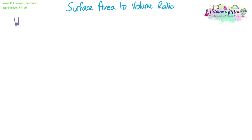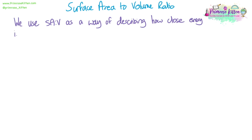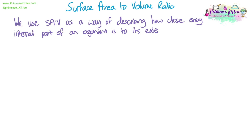Surface area to volume ratio — in biology we use it as a way of describing how close every internal part, or cell, of an organism is to the outside surface, the external surface. And this will be important for explaining how organisms exchange substances — how they get things from outside their environment into the inside of their bodies, and how they get waste materials out.